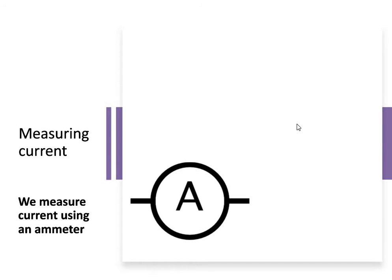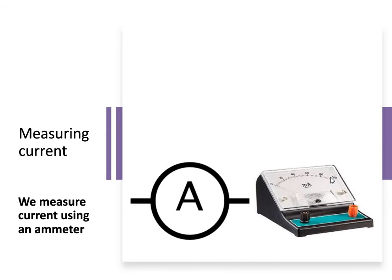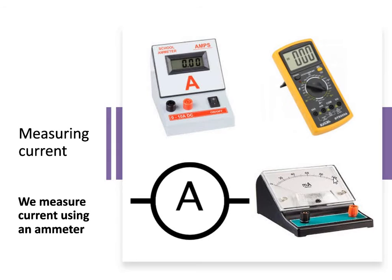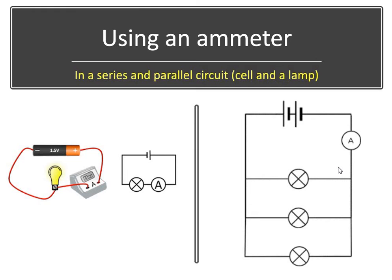So how do we measure current? We measure current using something called an ammeter. Here's our symbol for an ammeter. As I said, we're going to think about circuit symbols in more detail in another lesson. Here's some images of what an ammeter might look like. These are some pictures of what we might see them as when we're in the lab. This is how we measure current.